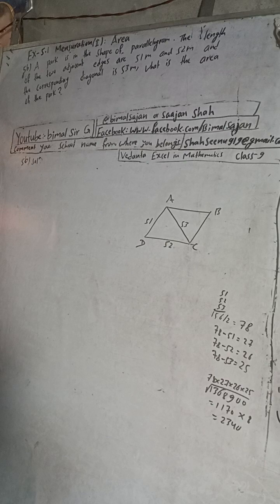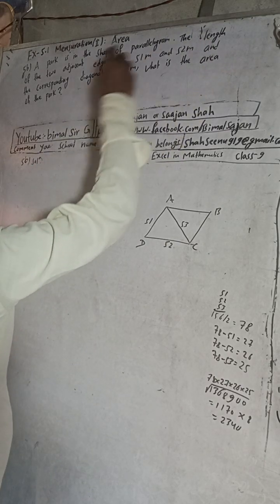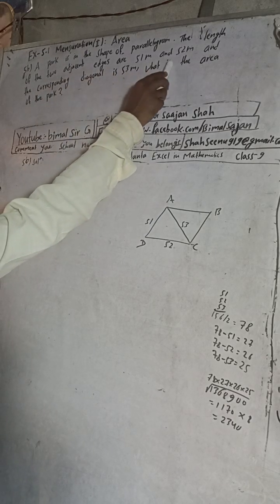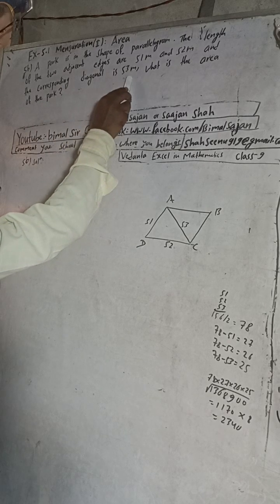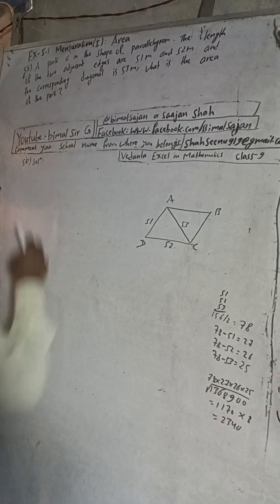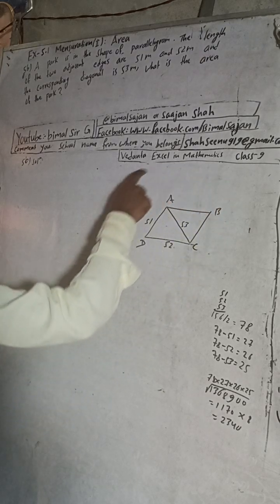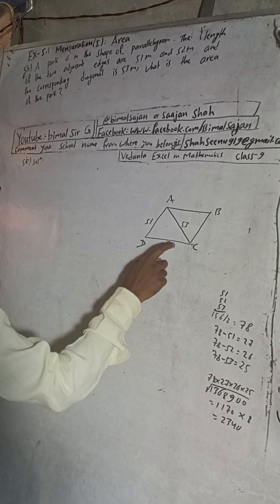The question is: a park is in the shape of a parallelogram. The length of the two adjacent edges are 51 meter and 52 meter, and the corresponding diagonal is 53 meter. What is the area of the park? So this is the shape of the park, that is the parallelogram shape.